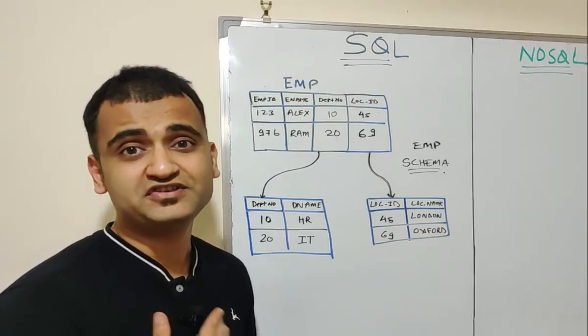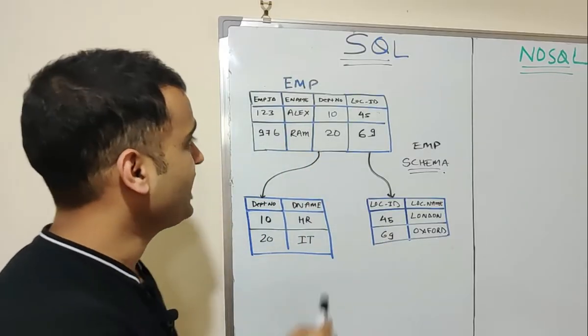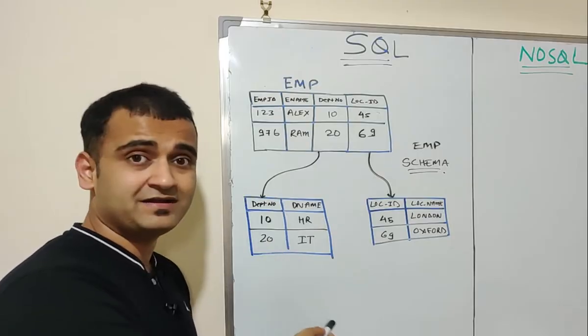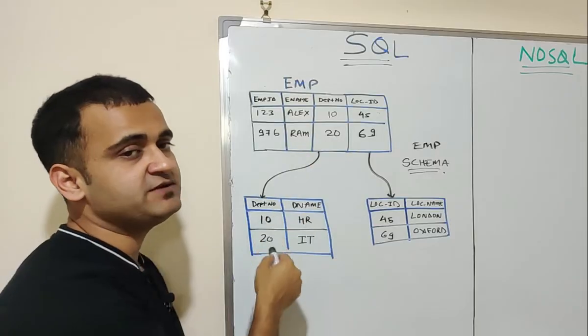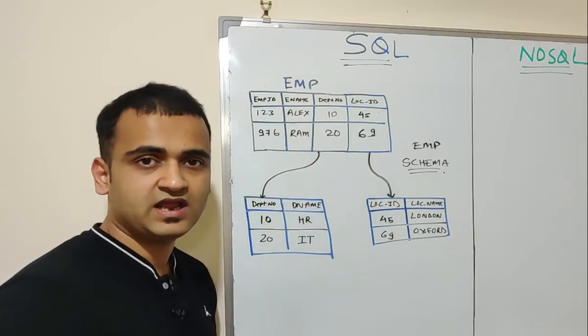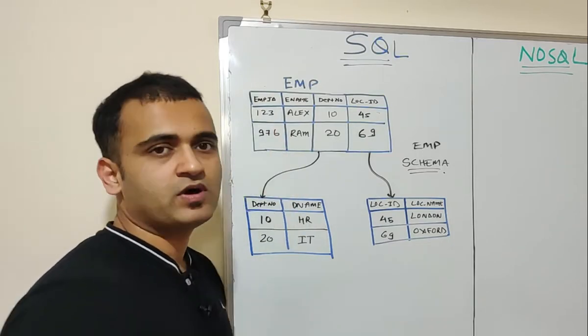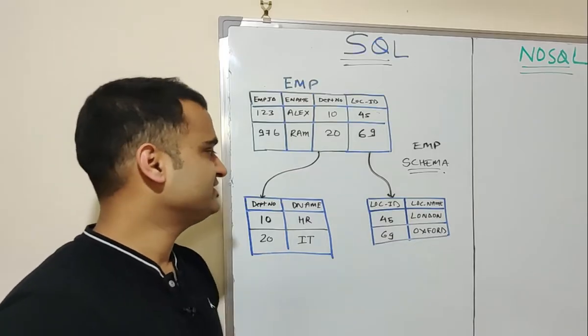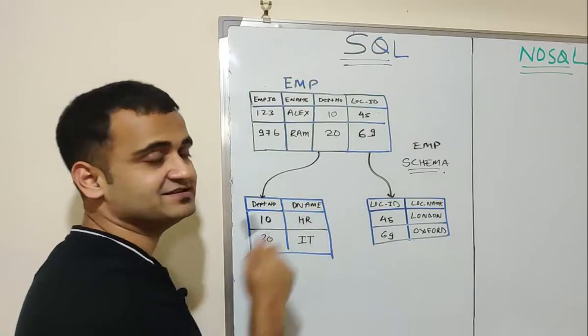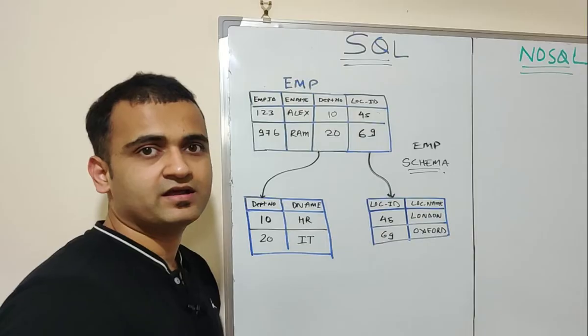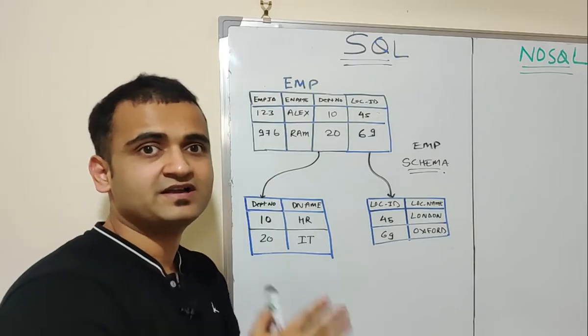So as you can see this is a traditional employee schema. This is an employee table containing all the details of an employee and then you have subsequent data stored in department and the location table and you have the keys, primary key, foreign key relationship between these tables. So if you want to understand which employee works in HR department and stays in London then you have to run a query and join the data based on these keys. Now this is a fixed format in which the data while coming into this kind of a database would expect the data to be in.